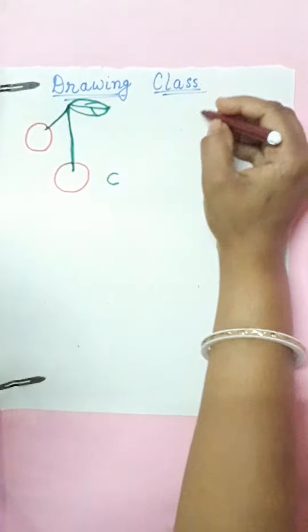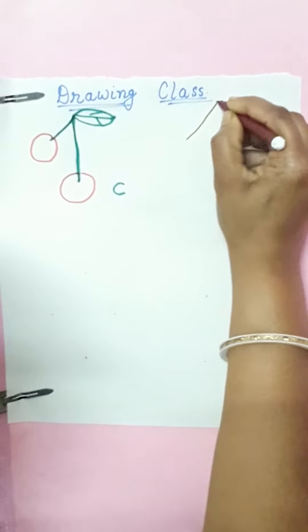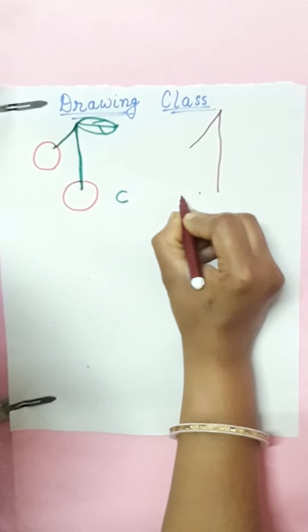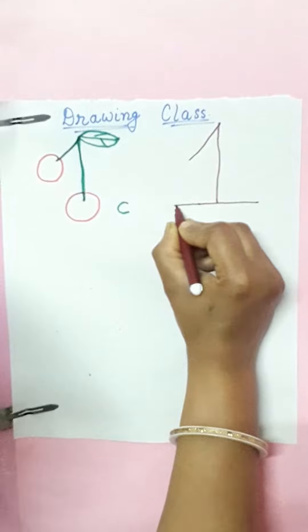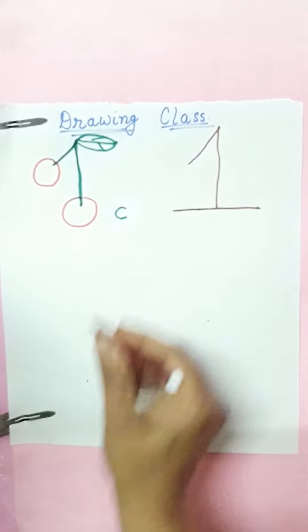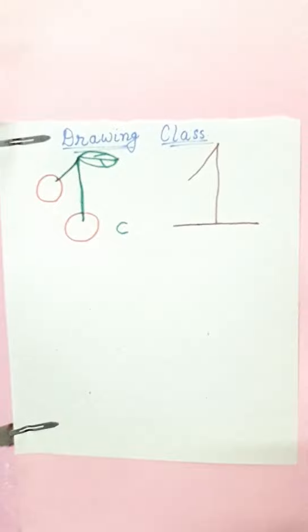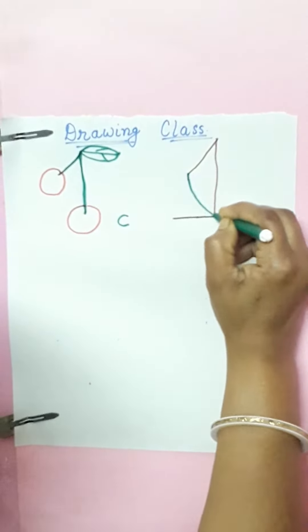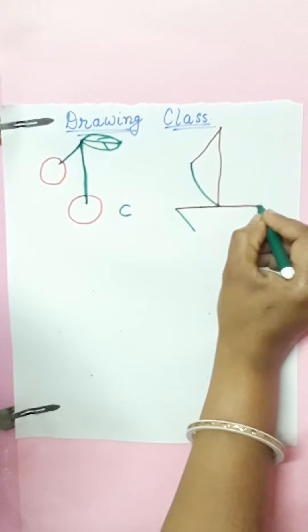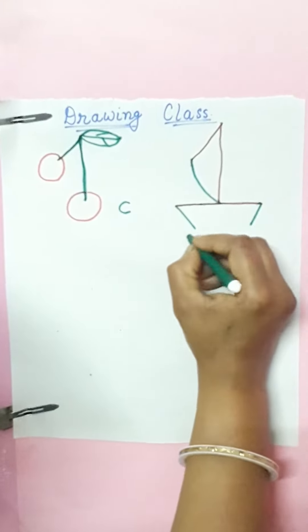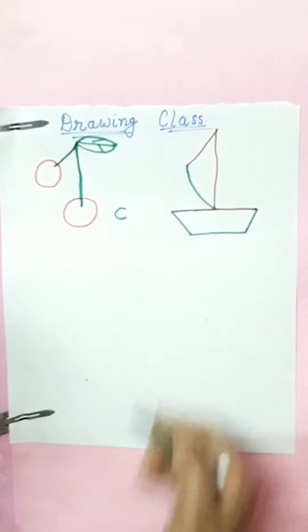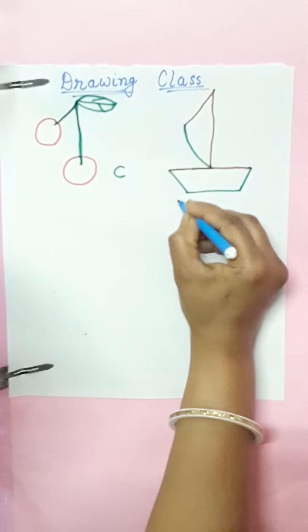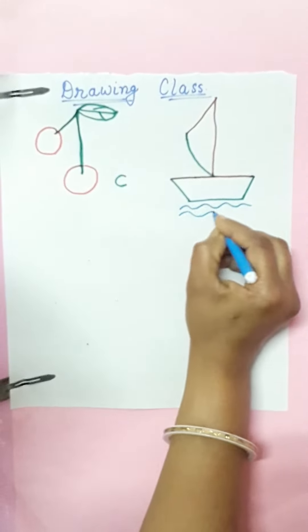Next again we will draw number one slanting line, standing line and now we will draw a sleeping line. Now what you will do, you will just join this number line till here, make a slanting line, slanting line, sleeping line and this becomes boat. And let's make some waves.